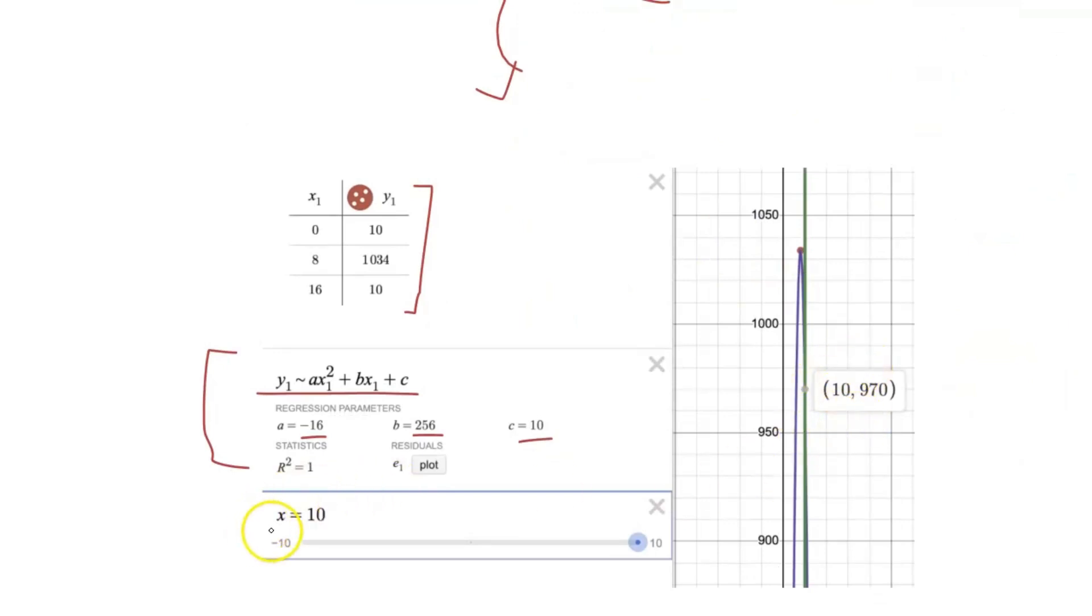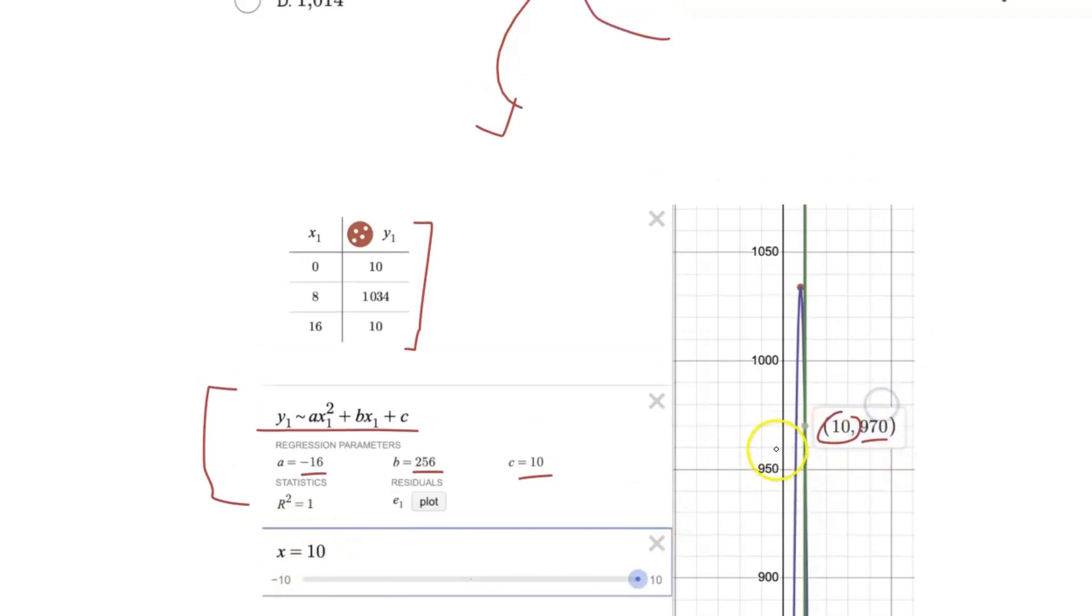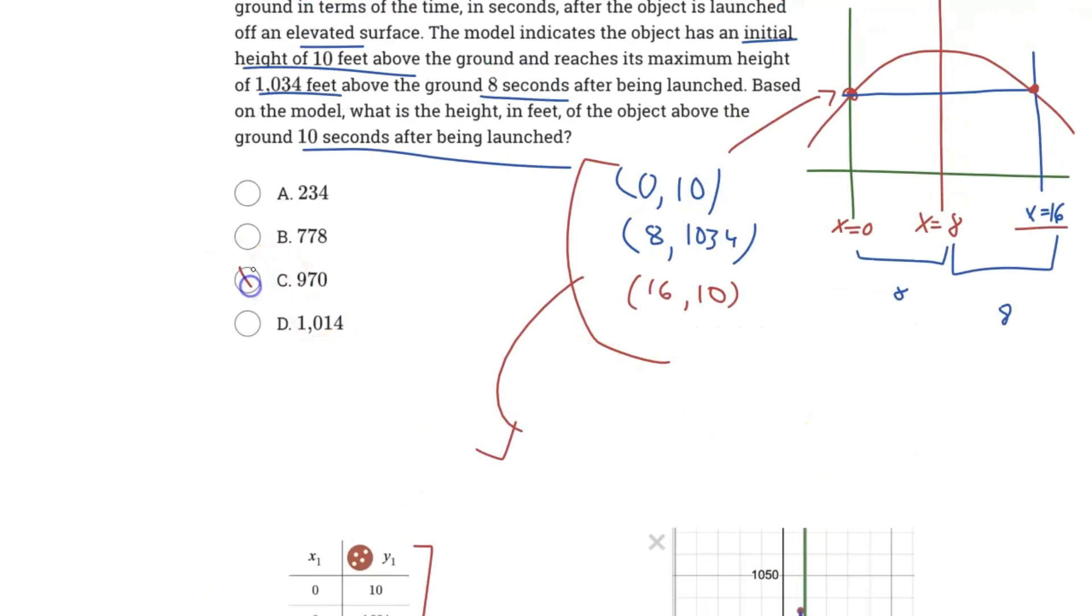So we just put in x equals 10 here, found the intersection. We see that when x equals 10, the y value equals 970. Therefore, the answer is choice C.